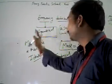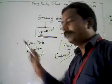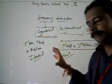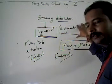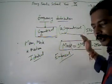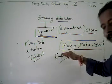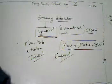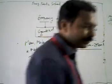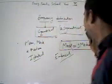When our distributions are symmetric, our mean, mode, and median are identical, meaning the values are the same. When our frequency distribution is skewed or asymmetrical, the measures of central tendency — mean, mode, and median — are given by the empirical formula: Mode = 3 Median − 2 Mean. If we know the values of any two measures, we can calculate the third measure. Now we are going to take some problems based on this empirical formula.